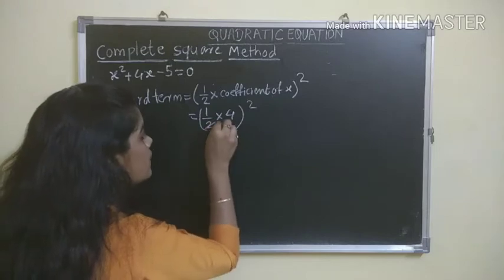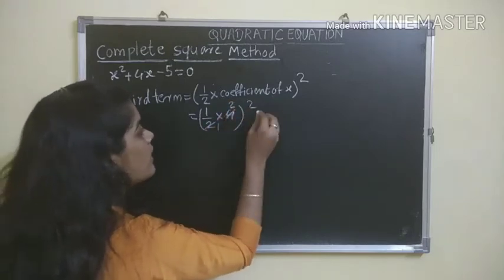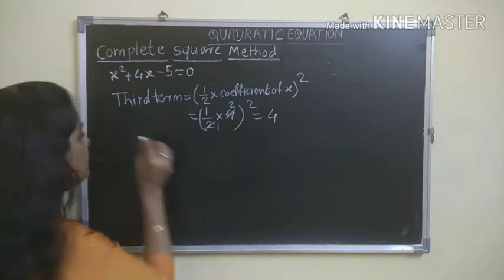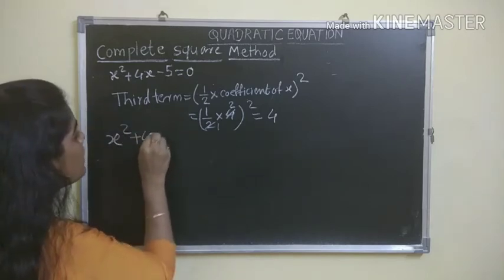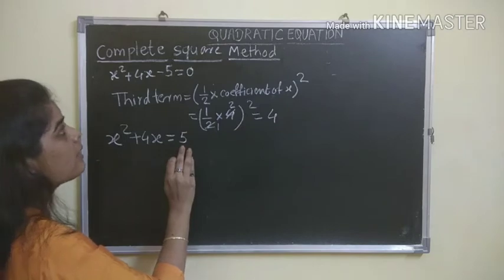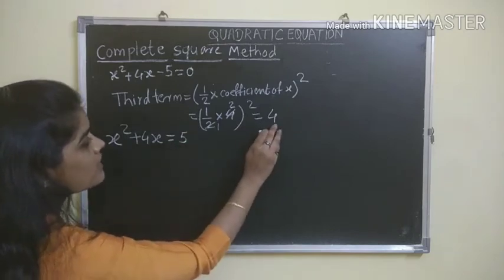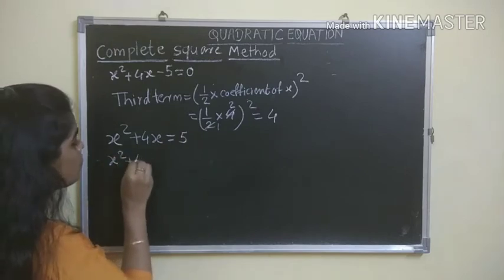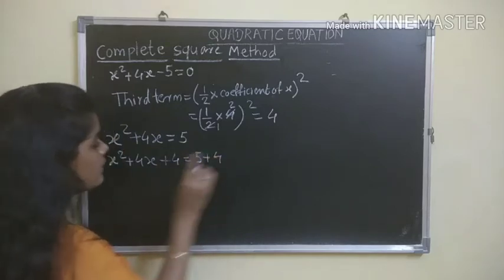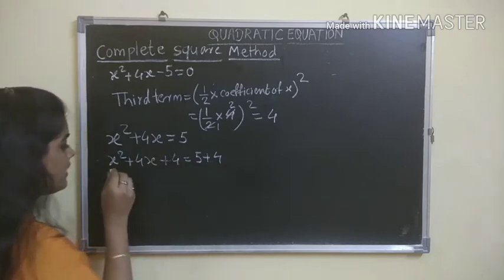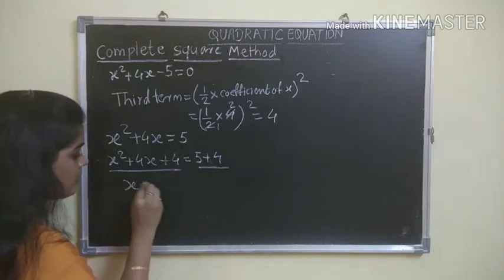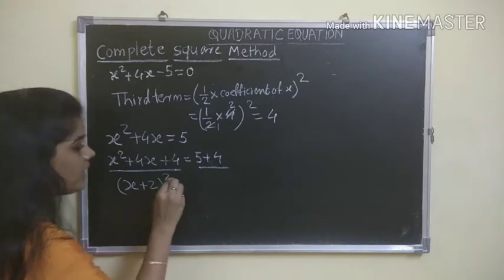Now here, adding 4 to both sides, the equation becomes x² + 4x + 4 = 5 + 4 = 9.